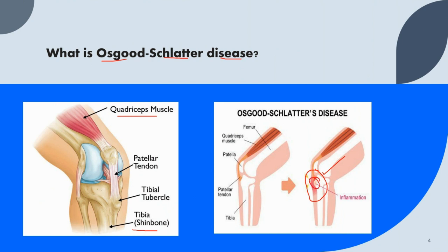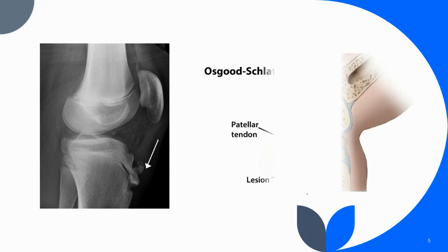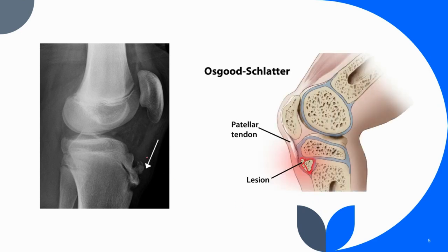Osgood-Schlatter disease is typically diagnosed in adolescence during the beginning of the growth spurts. Growth spurts usually start between ages 8 and 13 for girls and between ages 10 to 15 for boys. Teenage athletes who play sports that involve jumping and running are more likely to develop this disease.